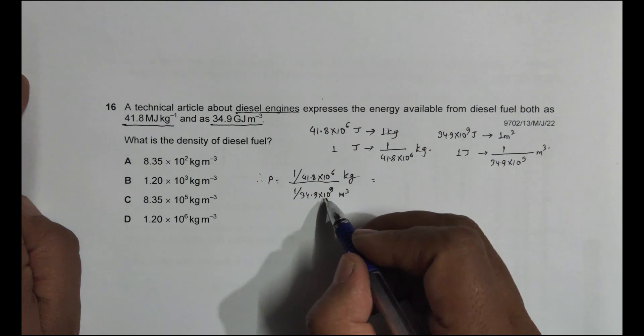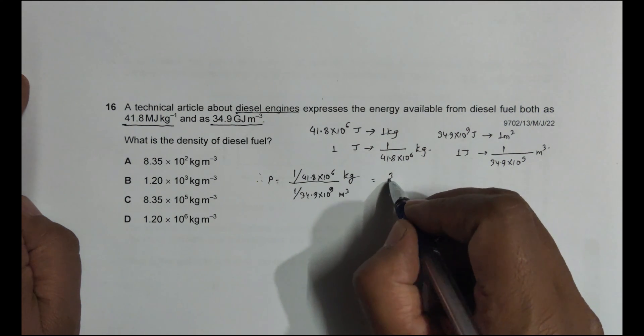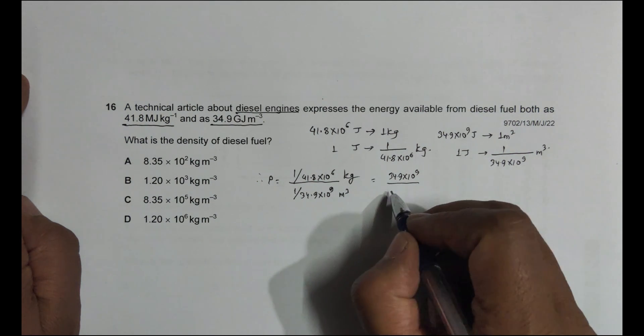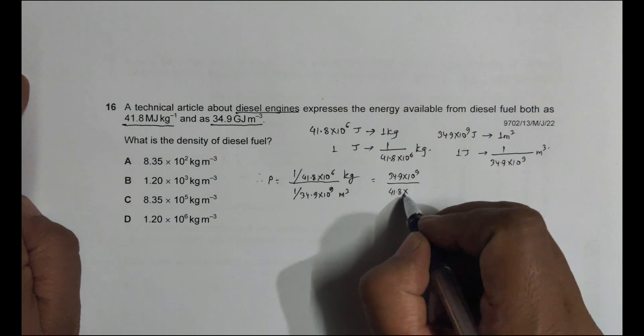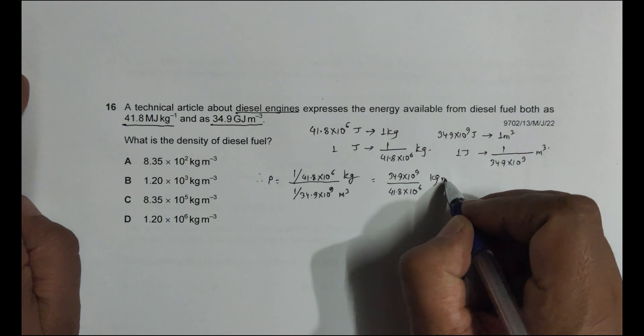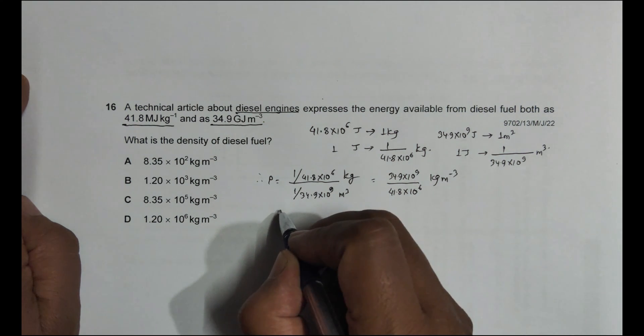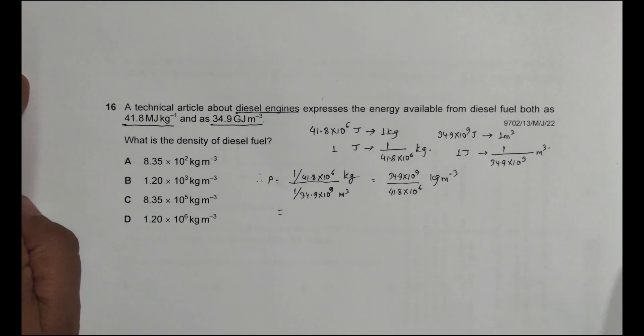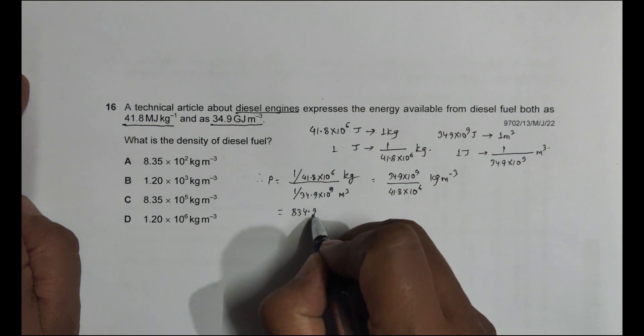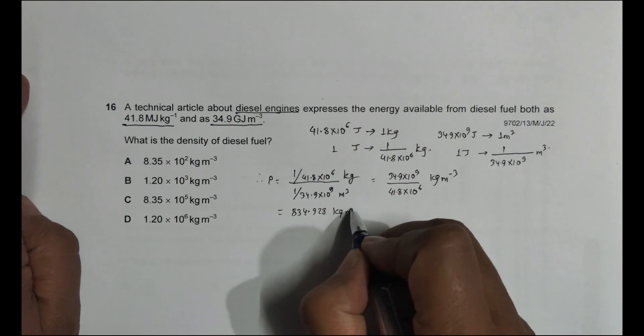So it will be equal to 34.9 into 10 to the power 9 divided by 41.8 into 10 to the power 6 kg per meter cube. So when I do calculation, 34.9 exponent 9 divided by 41.8 exponent 6 that becomes equal to 834.928 kg per meter cube.